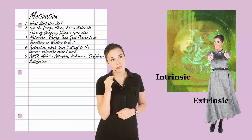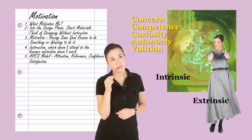Smith and Ragan suggest that work in the area of intrinsic motivation generally focuses in five areas: concern, competence, curiosity, autonomy, volition, and goal orientation.